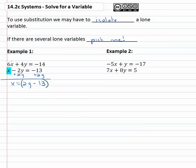If x equals that stuff, the x in the other equation can be replaced with that stuff. So now instead of 6x, it's 6 times 2y minus thirteen plus 4y equals negative fourteen. And then I just have to solve this equation.